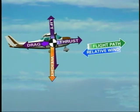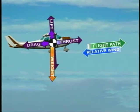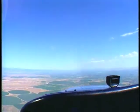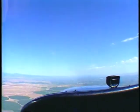Thrust also is divided into separate components — one which acts parallel to the flight path and the other which acts perpendicular to the flight path. The total thrust required is greater in a climb than in straight and level flight. Unless thrust is increased through an addition of power, airspeed will decrease as the pitch attitude increases.